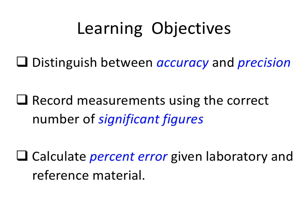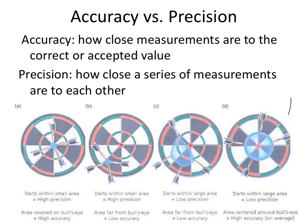During this lecture, students are going to be able to learn to distinguish between accuracy and precision in terms of data and measurement compilations. You're also going to be able to record measurements using the correct number of significant figures that are dictated by the instrument's precision. And lastly, you will be able to calculate percent error when given laboratory and reference materials.